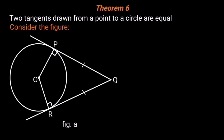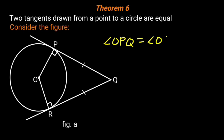Circle geometry, Theorem 6: Two tangents drawn from a point to a circle are equal. In the figure, tangent PQ is equal to tangent QR. Also, angle OPQ is equal to angle ORQ, which is equal to 90 degrees.